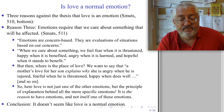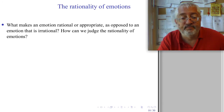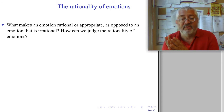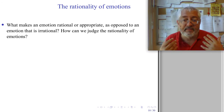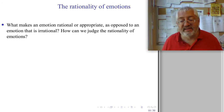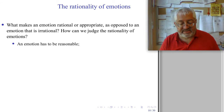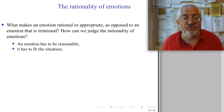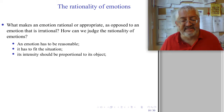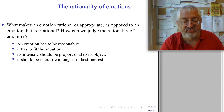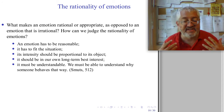Conclusion: it doesn't seem like love is a normal emotion. Another way to see that love is different from other emotions is to think about the rationality or appropriateness of emotions. How do we judge whether an emotion is appropriate or rational? We say: first, an emotion has to be reasonable; it has to be fitting to the situation; its intensity should be proportional to its object; it should be in our own long-term best interest; and it must be understandable.